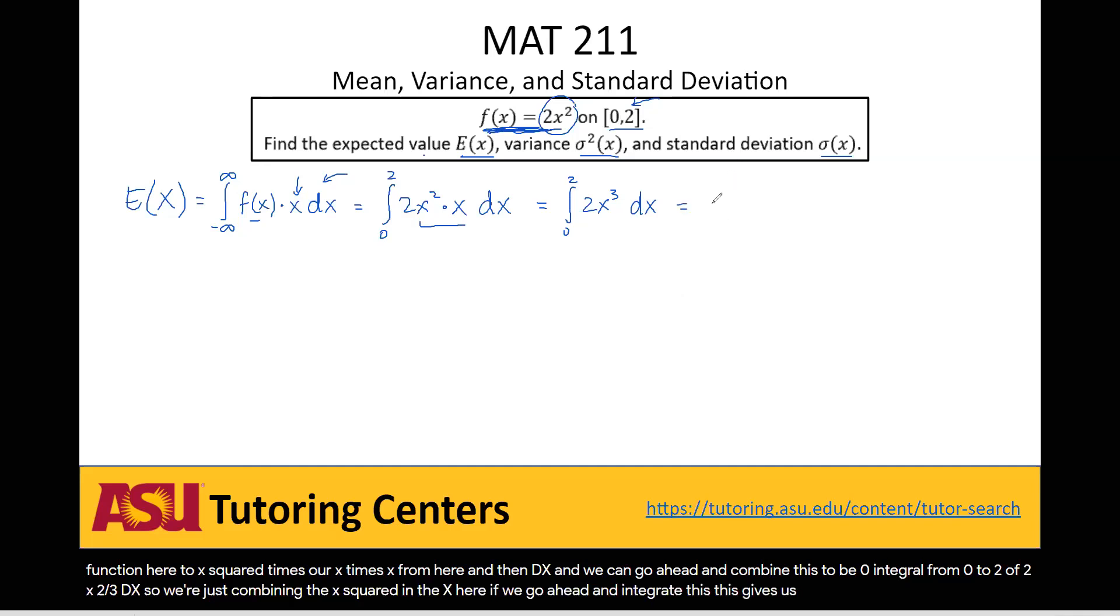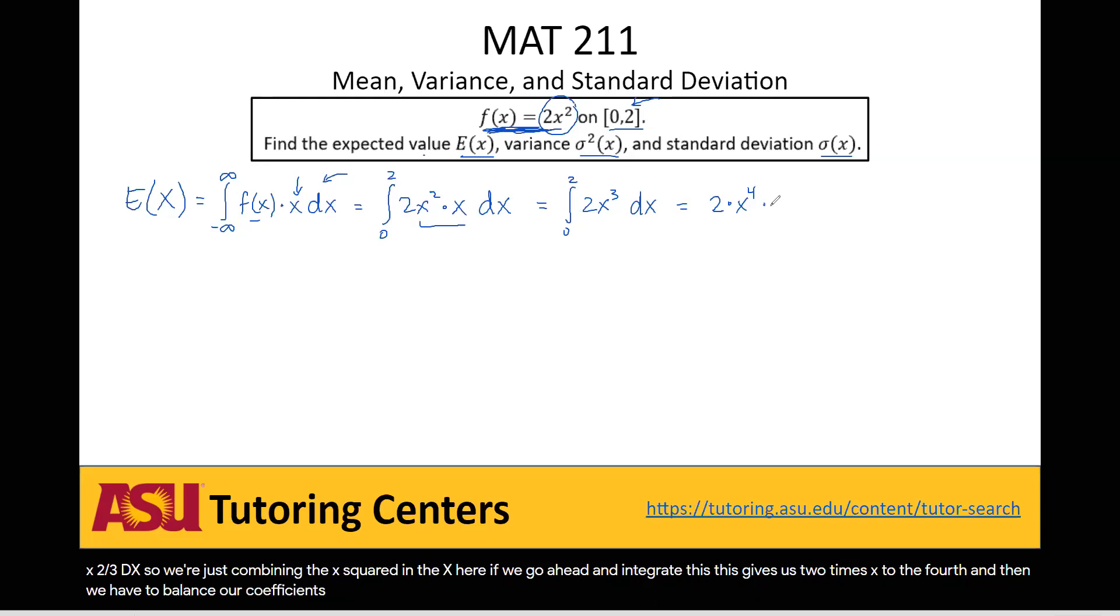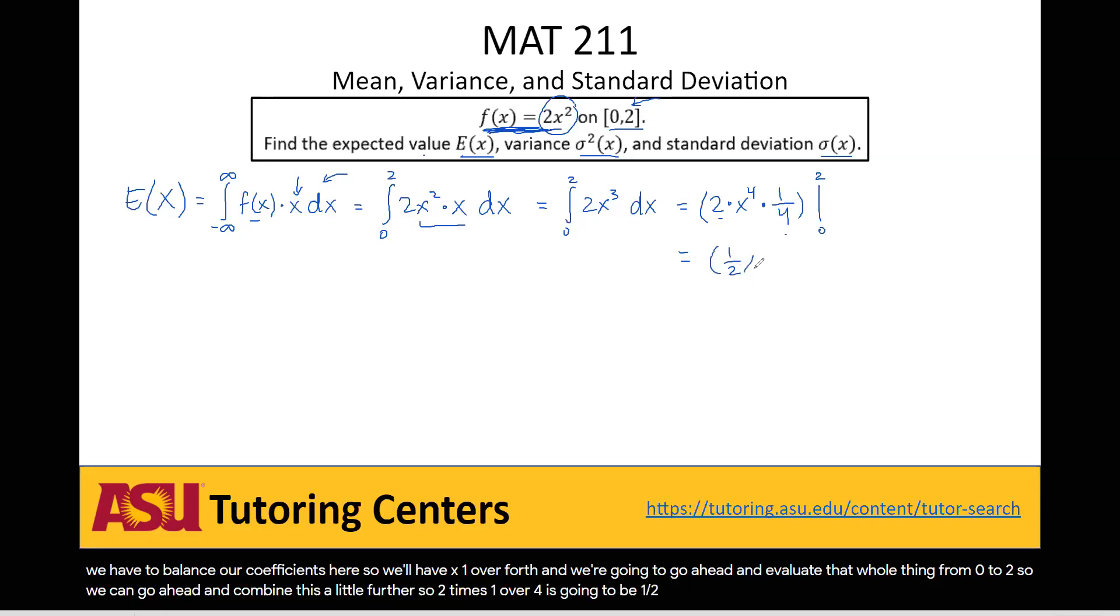If we go ahead and integrate this, this gives us 2 times x to the fourth. And then we have to balance our coefficients here. So we'll have times 1 over fourth. And we're going to go ahead and evaluate that whole thing from 0 to 2. So we can go ahead and combine this a little further. So 2 times 1 over 4 is going to be 1 half and then times our x to the fourth here. Evaluated again from 0 to 2.